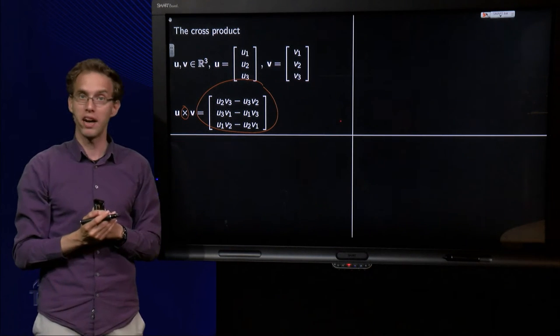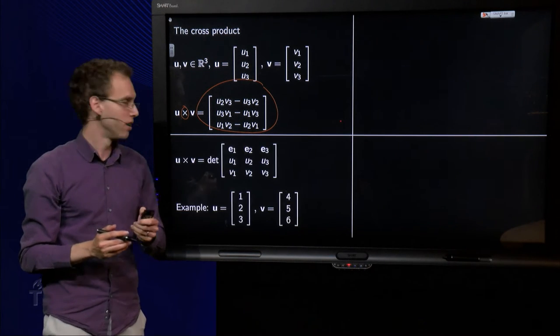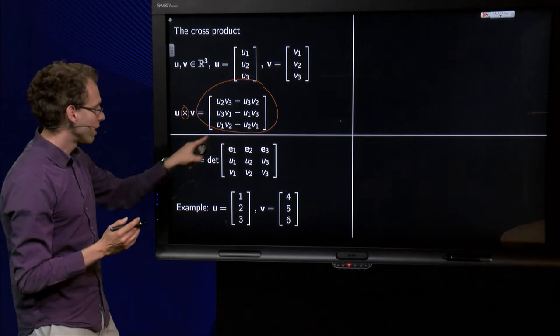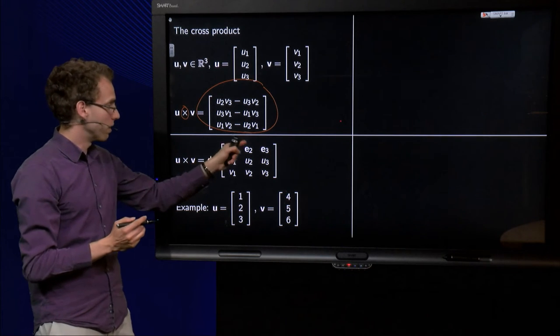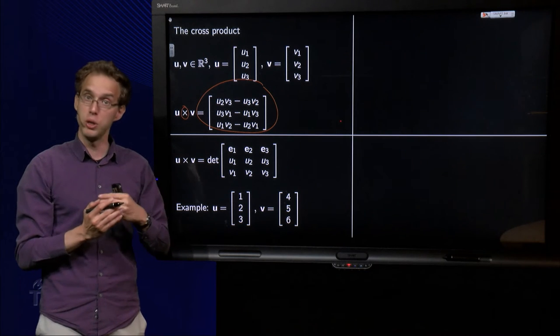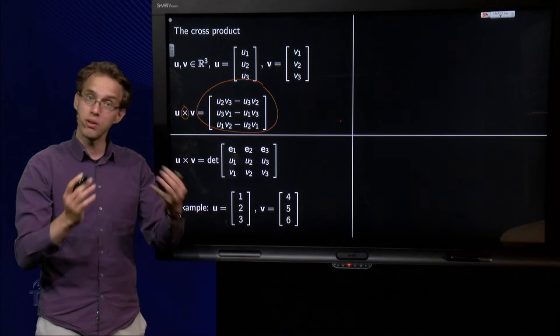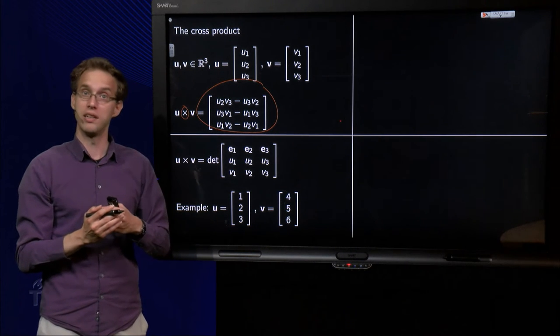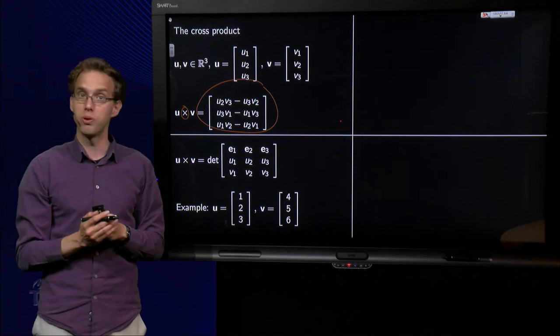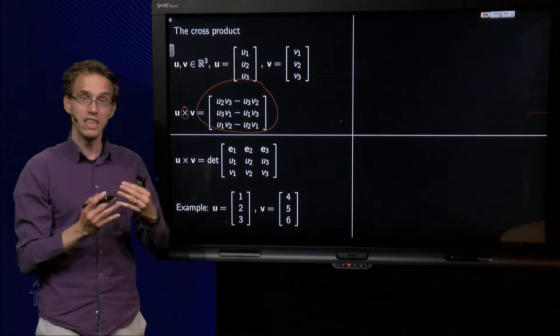But how do you memorize such a formula? It's horrible. We have a neat little trick to do that. If we want to compute u cross v, we compute the following determinant. We put e1, e2, and e3 as the first row in the matrix, then the vector u as the second row, and the vector v as the third row. Then you just compute this kind of odd determinant, and you can see that you get the same u cross v as the horrible formula, but this one is much easier to memorize.